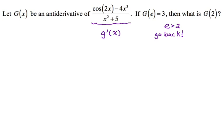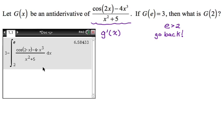So here's what I ended up doing on the calculator. I just typed it in. I did three minus the integral from two to e of that thing, and I got 6.584. So that's the answer choice I would choose, or I would write it to three decimal places.